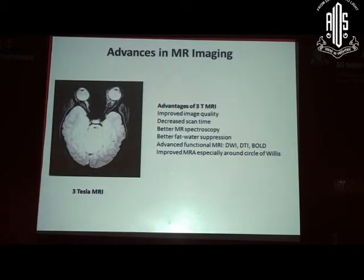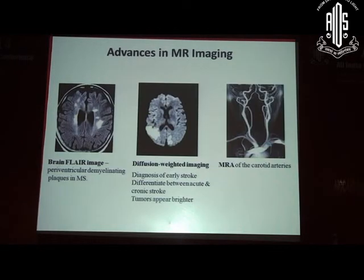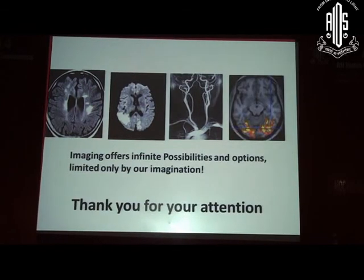There are advances you need to be aware of: FLAIR imaging for multiple sclerosis, diffusion-weighted imaging for strokes, and MRA which will help in aneurysms. The key message is that you need to localize the lesion, know what you're looking for, and then choose the appropriate investigation. Thank you.